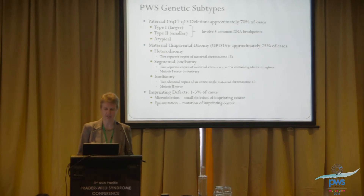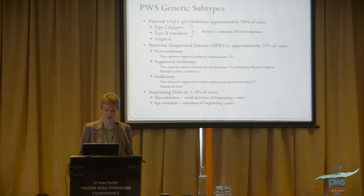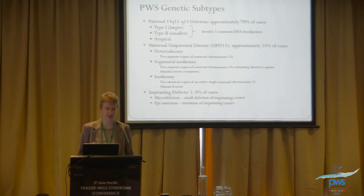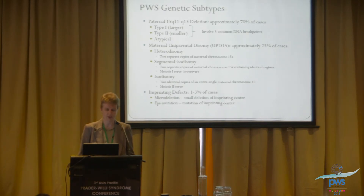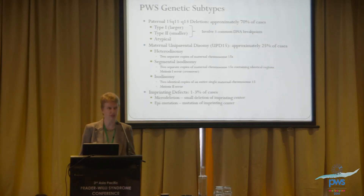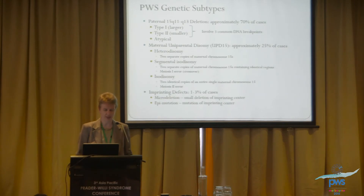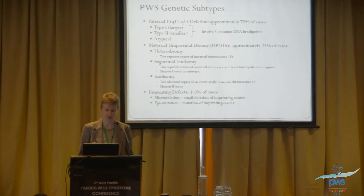Genetic subtypes — you've heard a bit about this earlier today. Paternal deletion accounts for approximately 70% of cases. I'm going to talk about Type 1, which is a larger deletion, and Type 2, which is a smaller deletion. There are also atypical deletions. Then maternal uniparental disomy, or UPD, accounts for approximately 25% of cases. There are three different types of UPD: heterodisomy, meaning you have two separate copies of the maternal chromosome 15.